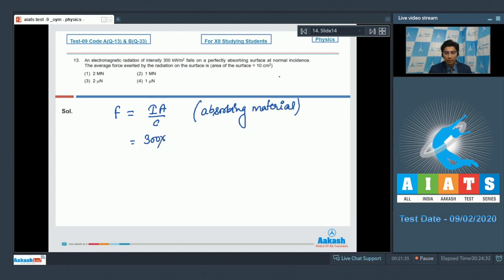The average force due to electromagnetic wave can be written as I into A by C. This is specifically for the case of absorbing material. Here, I is given to be equal to 300 into 10 raised to power 3, area is given to be equal to 10 into 10 raised to power minus 4 meter square, while C which is the speed of light will be equal to 3 into 10 raised to power 8. This is equal to 1 into 10 raised to power minus 6 newton or 1 micro newton. And therefore, option number 4 is the correct answer.